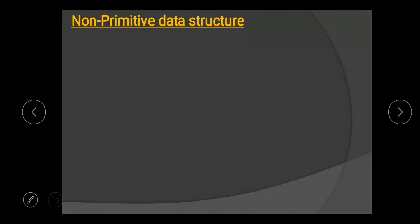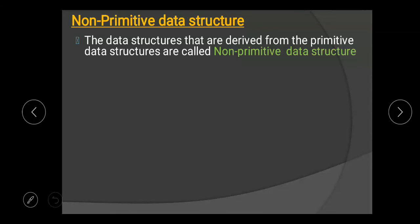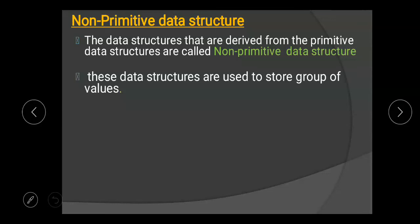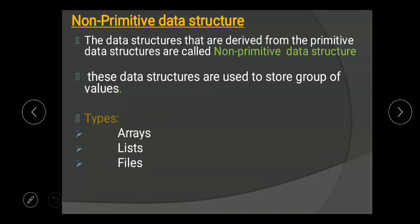Next is non-primitive data structure. Data structures that are derived from primitive data structures are called non-primitive data structures. These are used to store a group of values. For those group of values, we use non-primitive data structures — those are arrays, lists, and files — using which we can store a group of values.